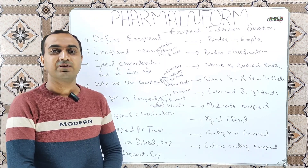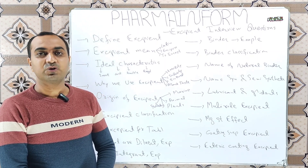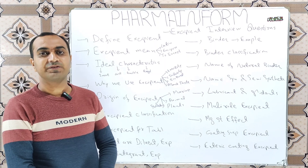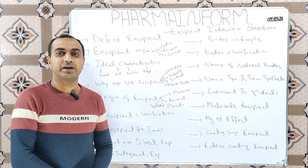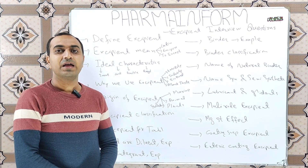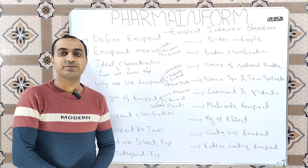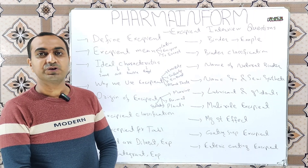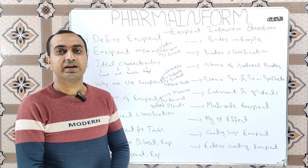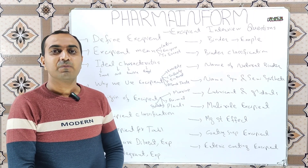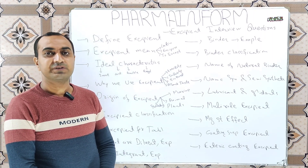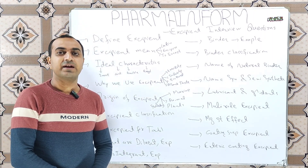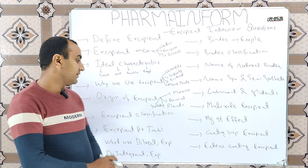The next question is: what is the origin of excipients? Excipients are derived from animals, plants, and marine origins, and they can also be manufactured synthetically and semi-synthetically.